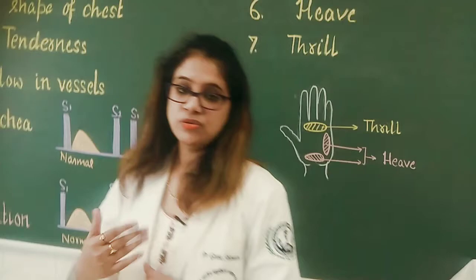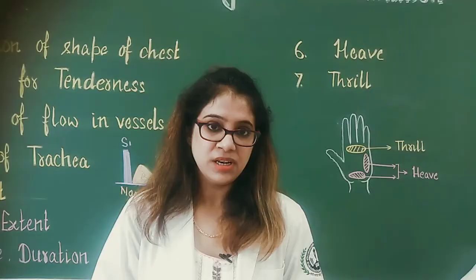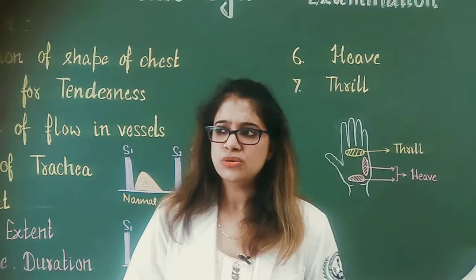The common causes of thrill are the same conditions that produce murmurs — high grades of murmur will produce a thrill. Patent ductus arteriosus, aortic stenosis, and ventricular septal defects are the common causes of thrill.